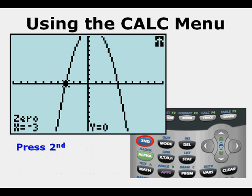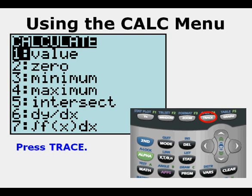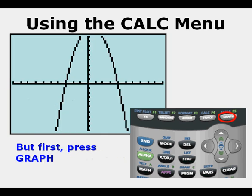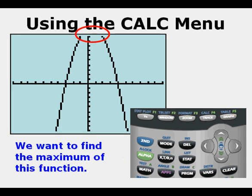Now we'll look at another option in the calc menu. Press second. Press trace, which gets you to the calc menu. We'll explore option four, maximum. But first, press graph. We want to find the maximum of this function that occurs somewhere above our current view screen.